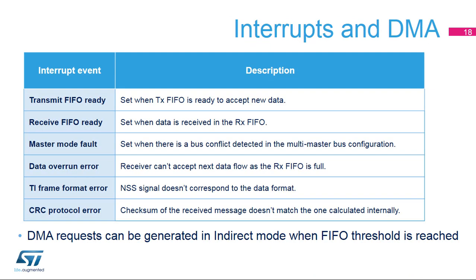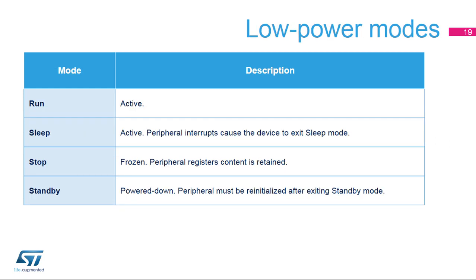Here is an overview of the SPI interrupt events. There are FIFO and error detection events to handle data flows. DMA requests are triggered internally by FIFO threshold events. Here is an overview of the SPI status in specific low power modes. The device is not able to perform any communication in stop or standby modes. It is important to ensure that all the SPI traffic is complete before the peripheral enters stop or power down modes.